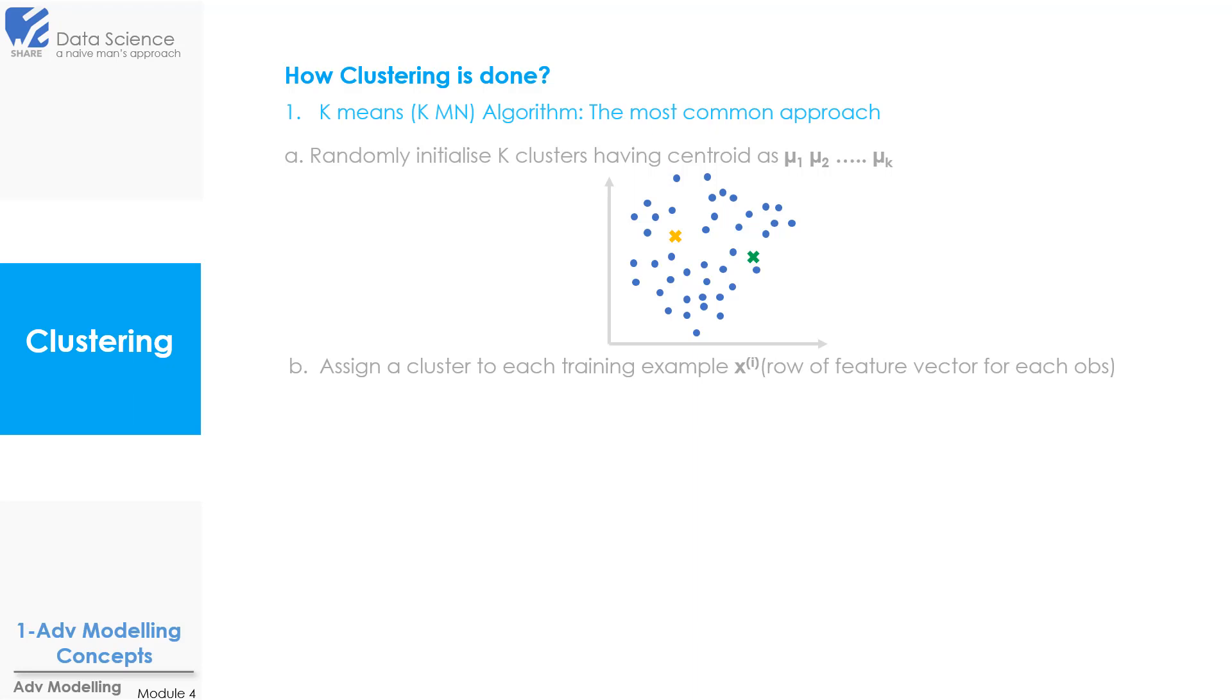Now how do we assign the observations to the cluster? We measure the distance of each point from the centroid. Let's say we have two centroids as shown in the figure with orange and green cross, and we have two points shown with orange and green dots. Then we will measure the distance of these two points from centroid 1, the orange cross. After that we will measure the distance from the second centroid, that is the green cross. Now this is called Euclidean distance and it is given by the formula shown here. So based on the minimum distance of a point from the centroid we will assign that point to that particular cluster.